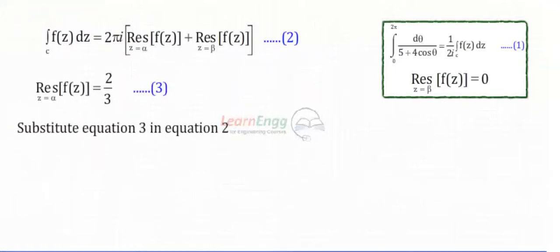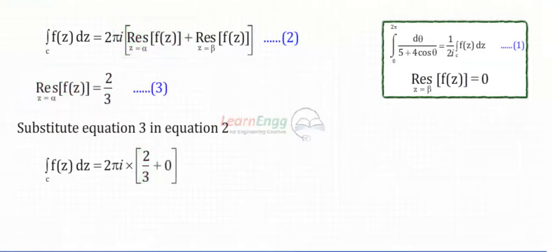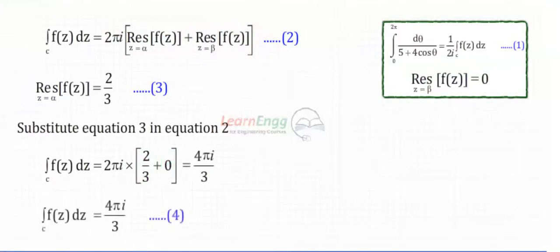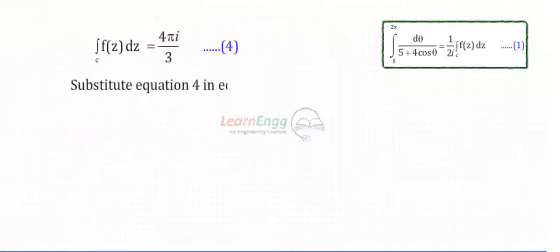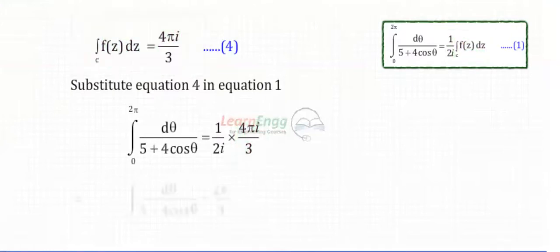Substituting equation 3 into equation 2 and simplifying, we get the integral from 0 to 2π of dθ/(5 + 4cosθ) = 4πi/(2i) · (2/3) = 2π/3. Hence proved.